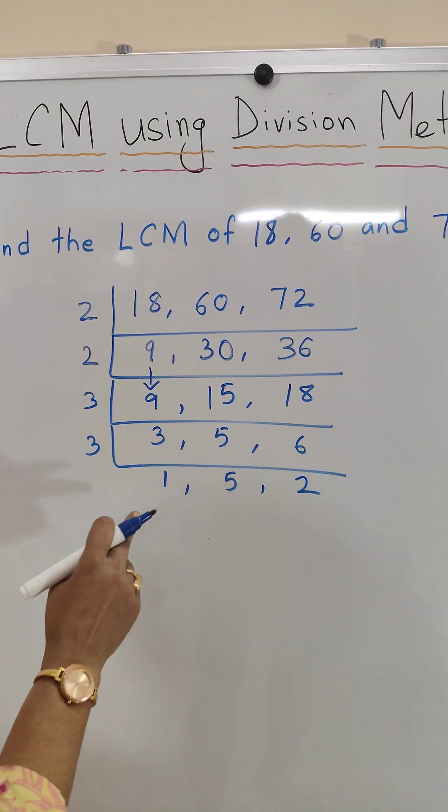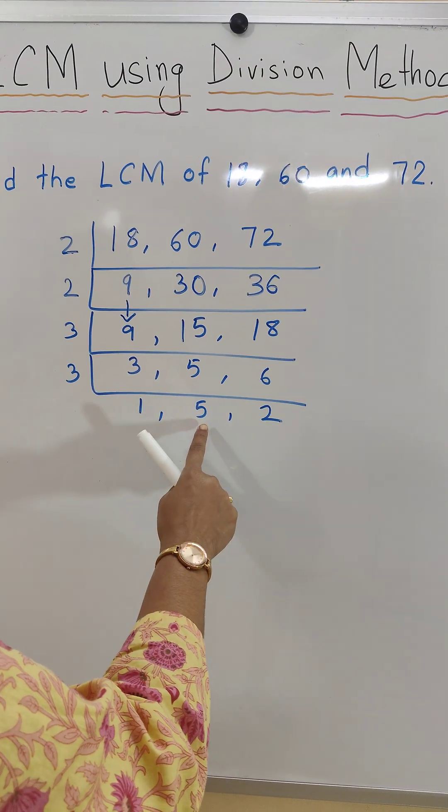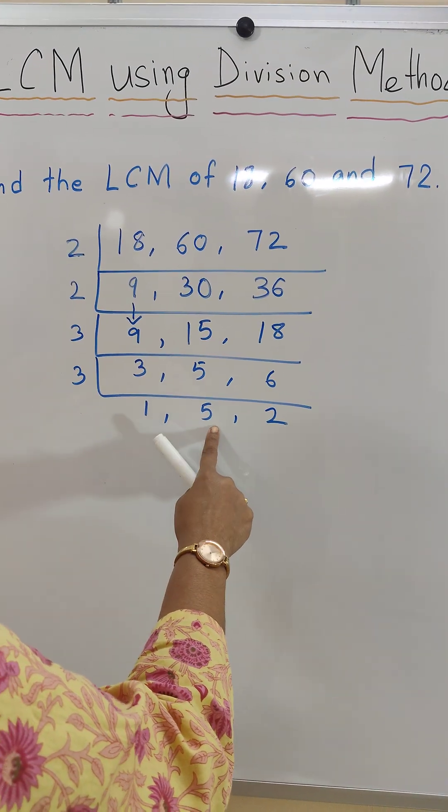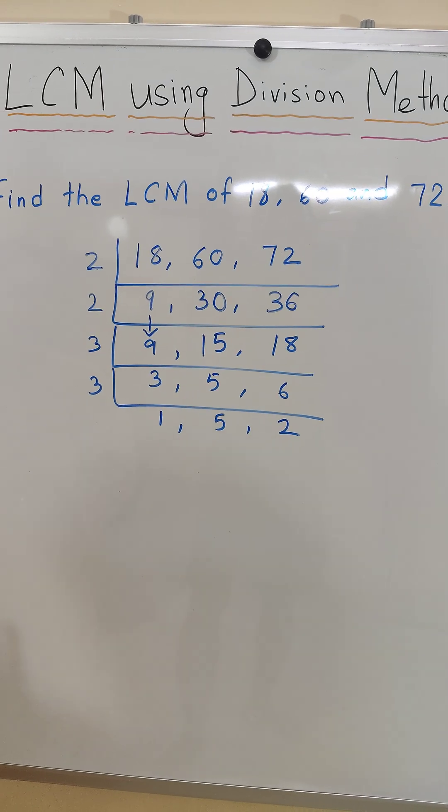Now we see these are the divisors. There is no prime number divisible by 5 and 2, so these numbers are left undivided.